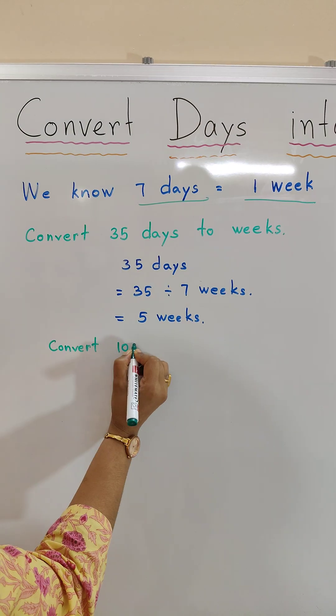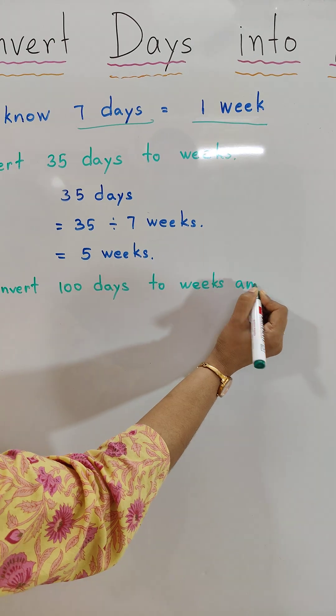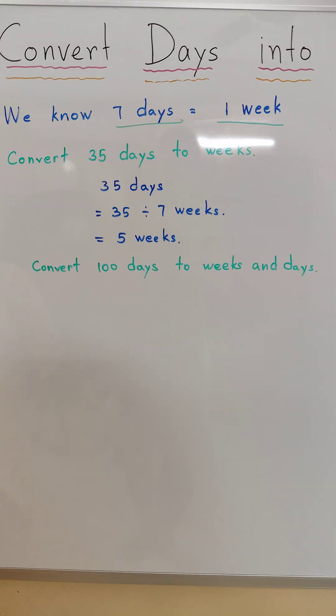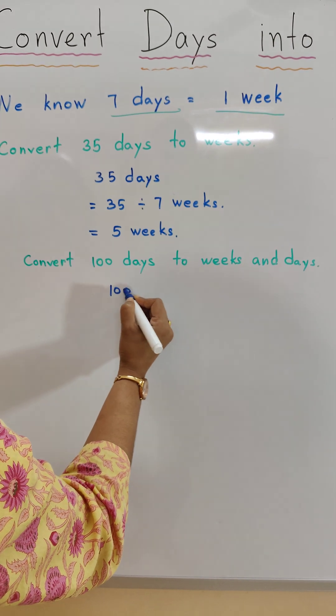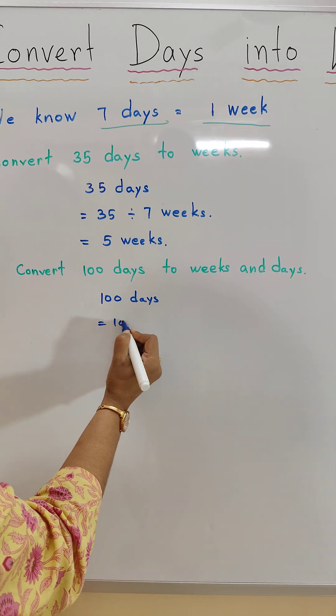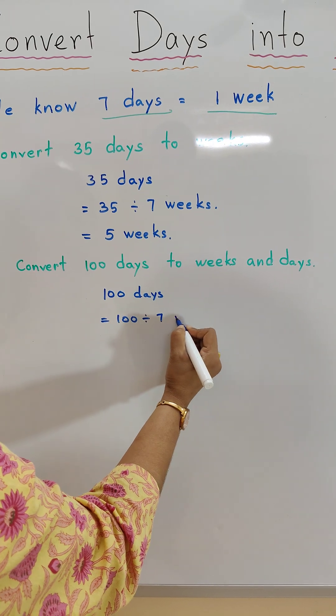Convert 100 days to weeks and days. We know 7 days is equal to 1 week. So 100 days is equal to 100 divided by 7 weeks.